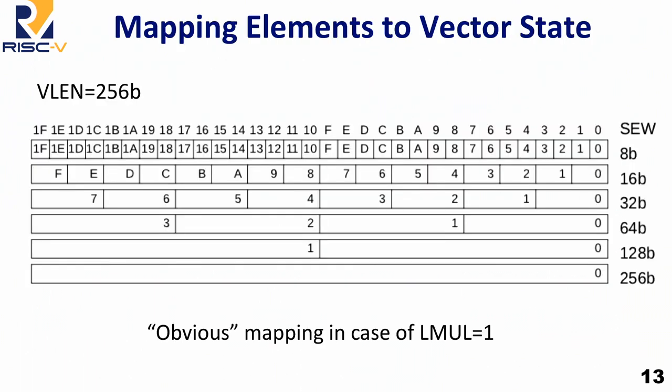Mapping elements to vector state is very simple. One of the things that has changed in recent iterations is making the registers and state encoding very explicit. If you have 256 bits, you can divide it into 8-bit, 16-bit, or 32-bit elements numbered contiguously from the lowest bit to the highest bit — the obvious mapping. This is the case when LMUL equals 1, meaning one vector register at a time is used in instructions.